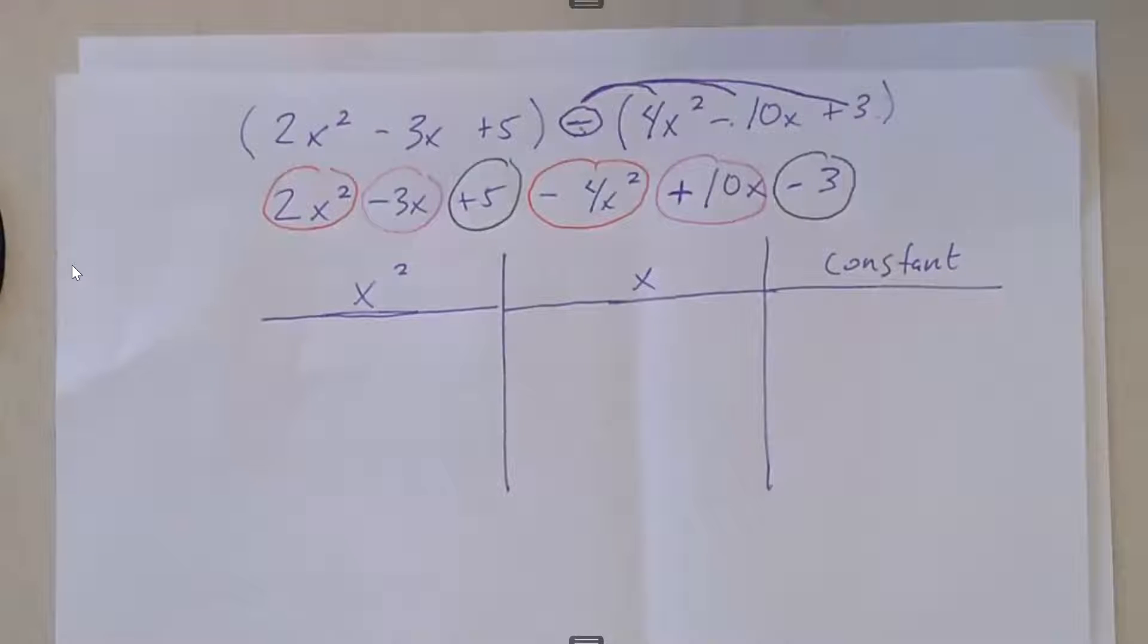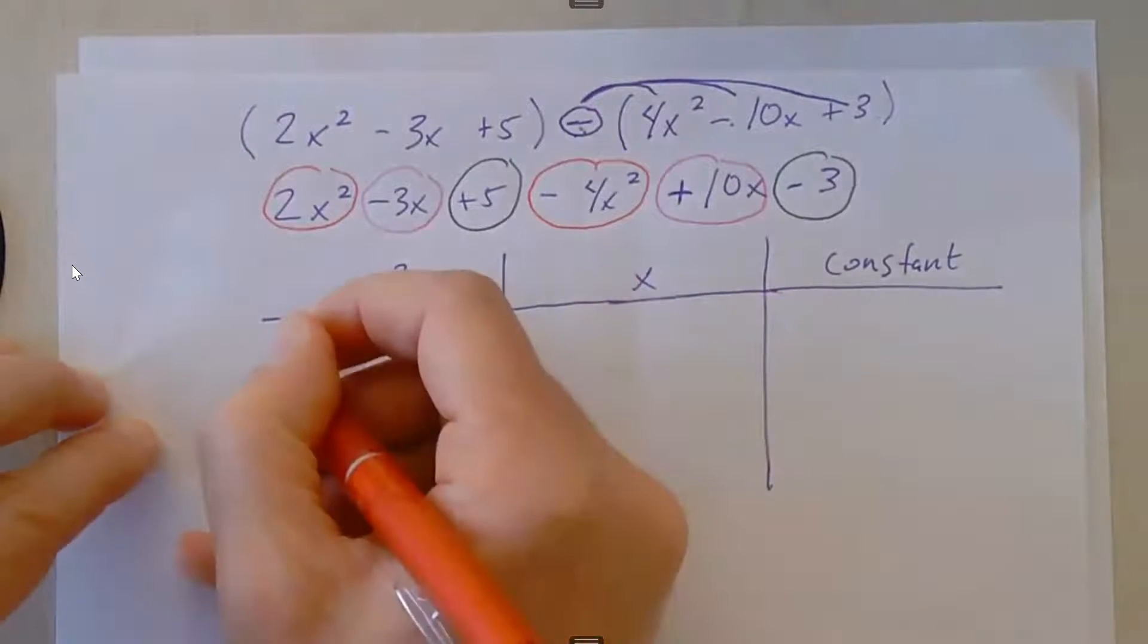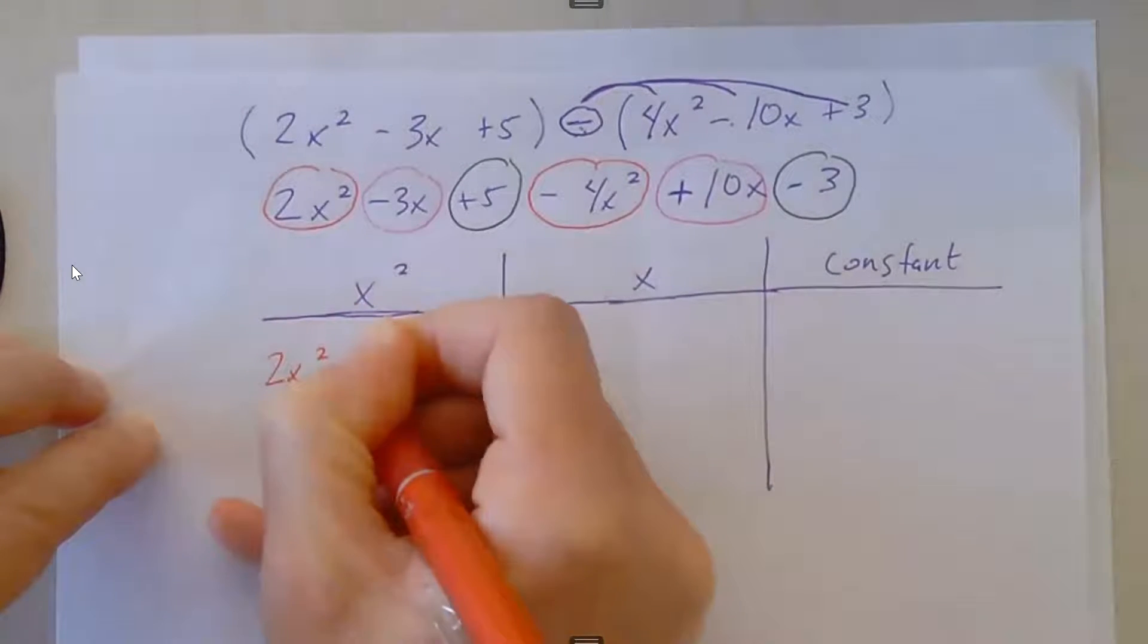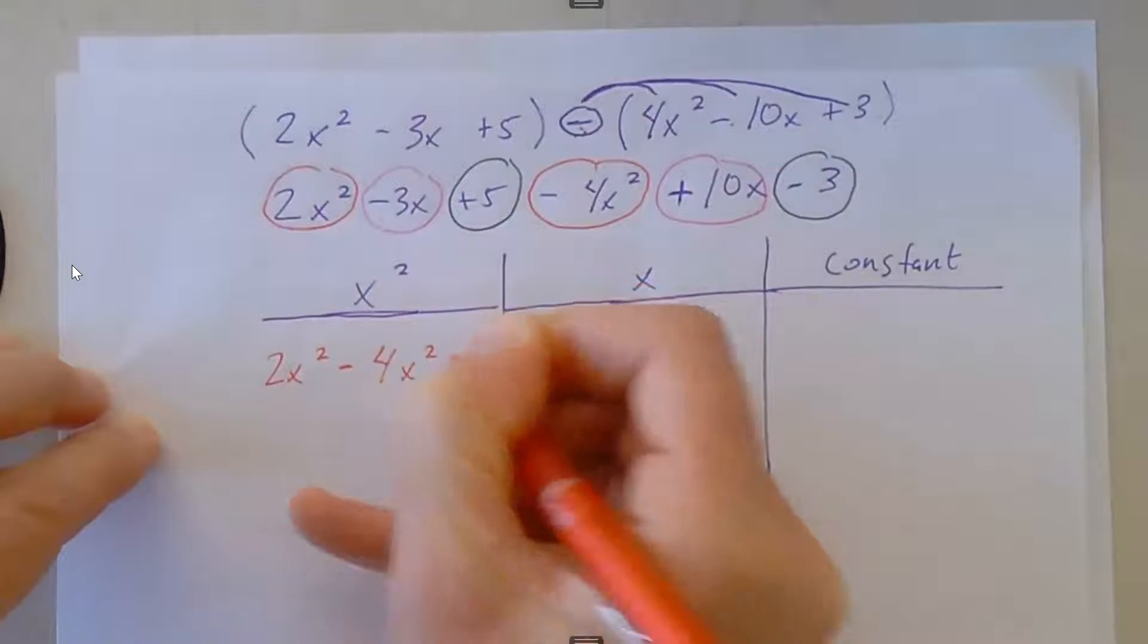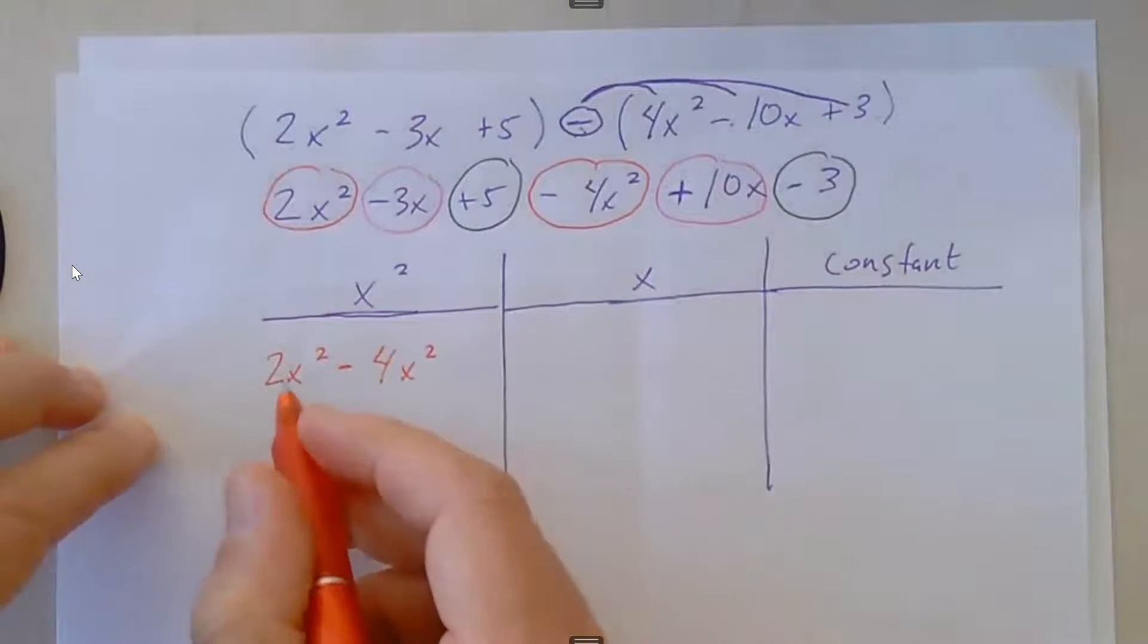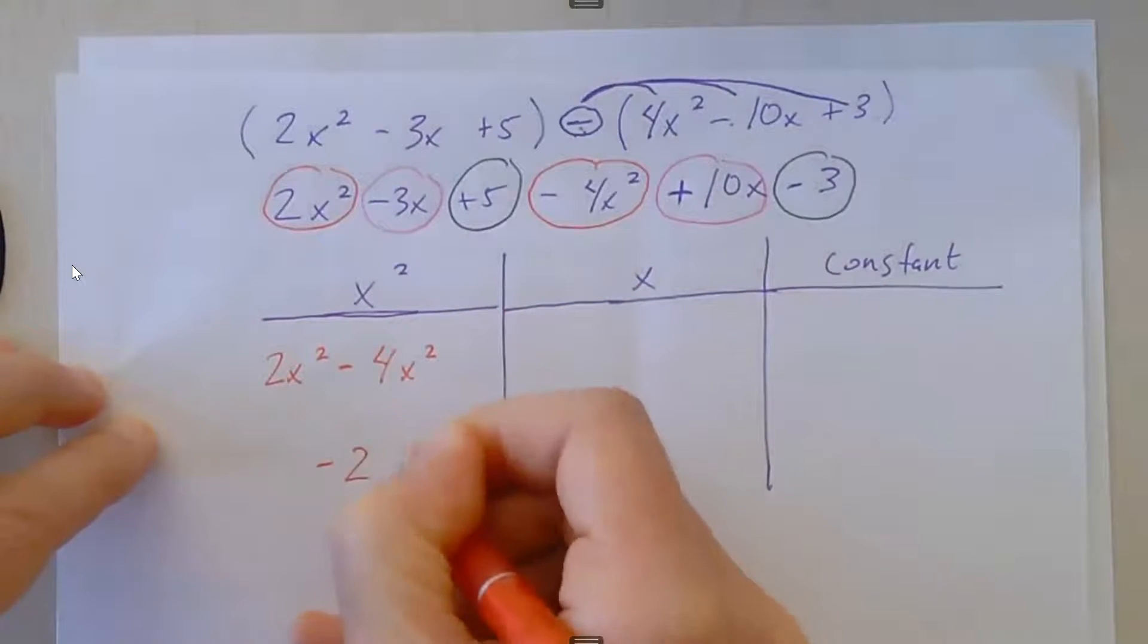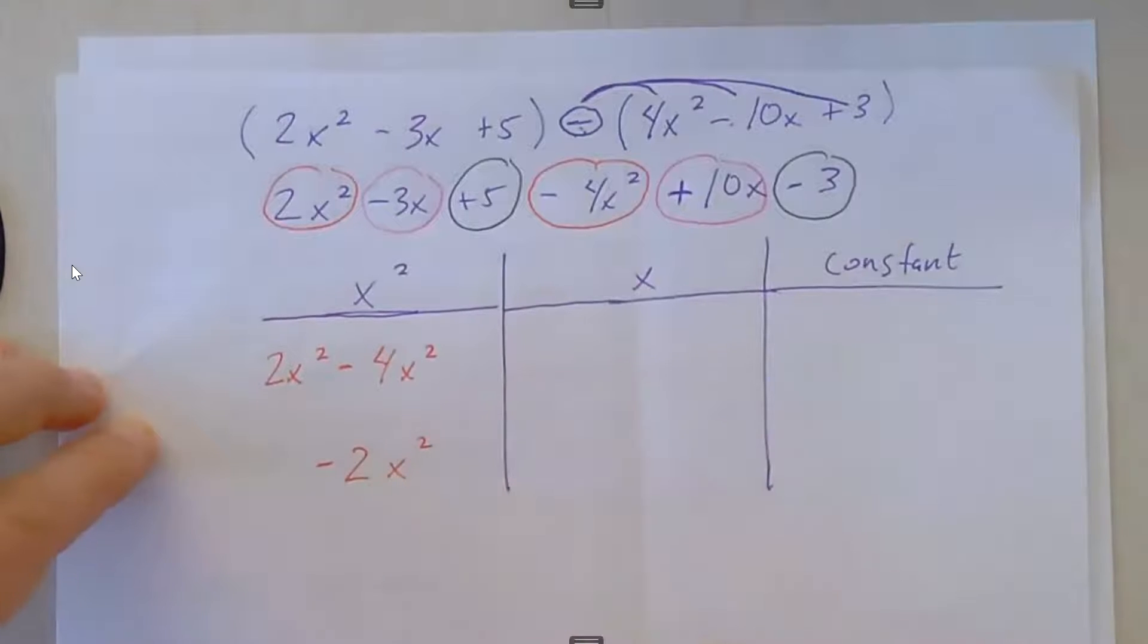In this example I have three different types of terms. I have x square terms which I circled in red. So this is 2x² - 4x². 2x² - 4x² is negative 2x². I know these are like terms because the variable terms are exactly the same: x to the second power, x to the second power.